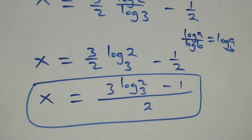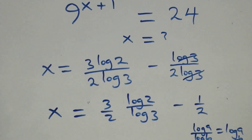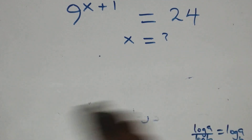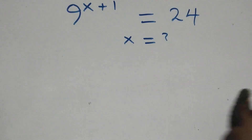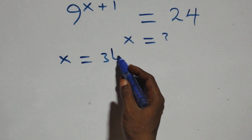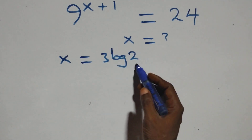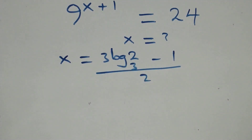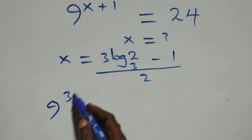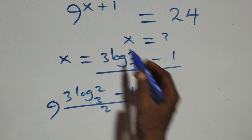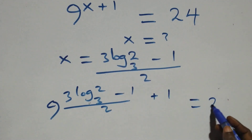Let's check if this satisfies the given problem. We substitute the value of x, which is three log two base three minus one, all over two. What we have is nine raised to the power of that expression plus one, equals twenty-four on this side.